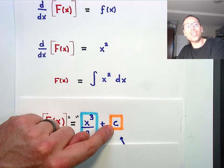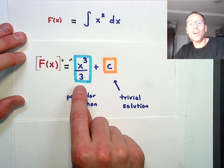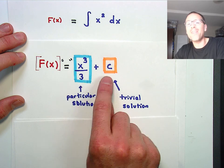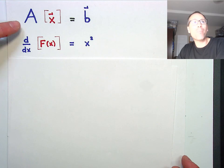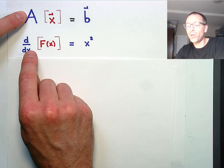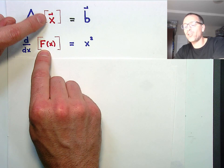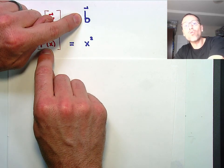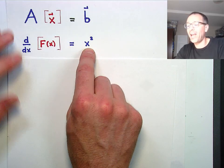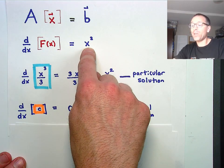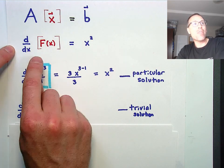And the reason that we do that is the particular solution, if I differentiate that particular solution, I get back to x squared. If I differentiate the constant, I get to 0. It's a particular plus 0. In the parlance of linear algebra, we call that a particular solution and this a trivial solution to the corresponding homogeneous linear system problem. Remember in this example, the matrix A is represented by the differential operator, the vector x is represented by an unknown function, and the known right hand side vector b is represented by the known function x squared.